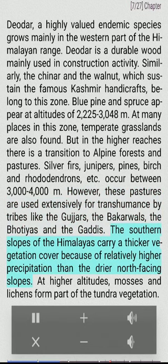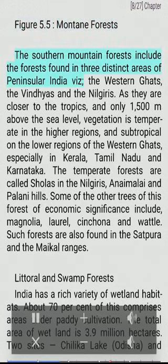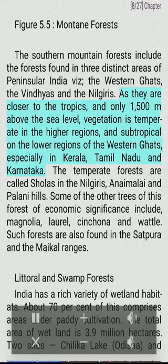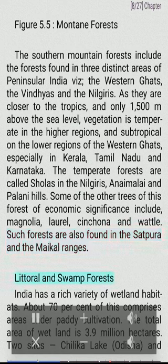The southern slopes of the Himalayas carry a thicker vegetation cover because of relatively higher precipitation than the drier north-facing slopes. At higher altitudes, mosses and lichens form part of the tundra vegetation. The southern mountain forests include forests found in three distinct areas of peninsular India: the Western Ghats, the Vindhyas and the Nilgiris. As they are closer to the tropics and only 1,500 meters above sea level, vegetation is temperate in the higher regions and subtropical on the lower regions of the Western Ghats, especially in Kerala, Tamil Nadu and Karnataka. The temperate forests are called sholas in the Nilgiris, Anaimalai and Palani Hills. Trees of economic significance include magnolia, laurel, cinchona and wattle. Such forests are also found in the Satpura and the Maikal Ranges.